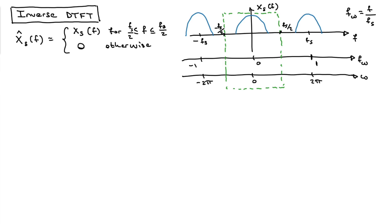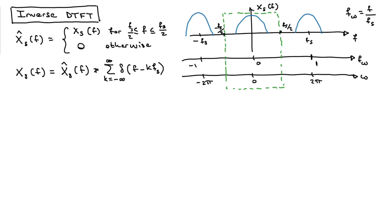To get back to the actual X_S(F), I need to convolve this windowed signal with an impulse train. I know this seems backwards, but it will make our lives easier. The impulses sit in the frequency domain at -2Fs, -Fs, 0, Fs, 2Fs, and so on — very similar to what we did in the forward discrete-time Fourier transform.